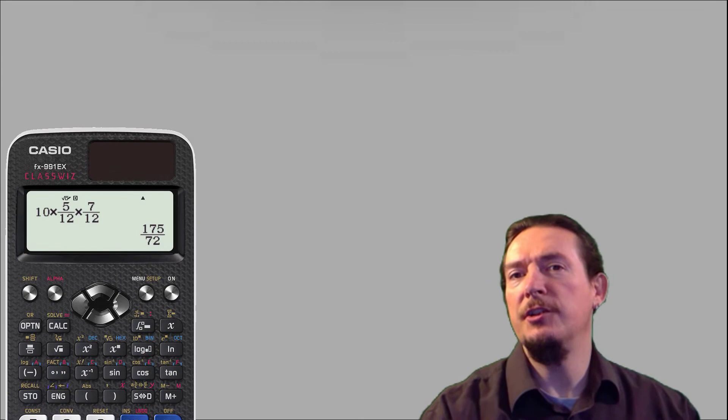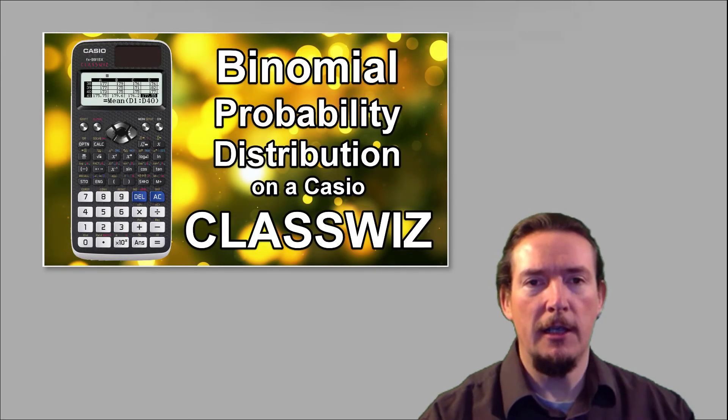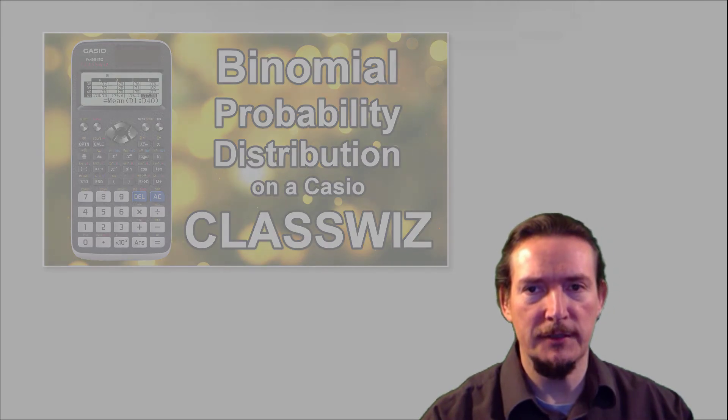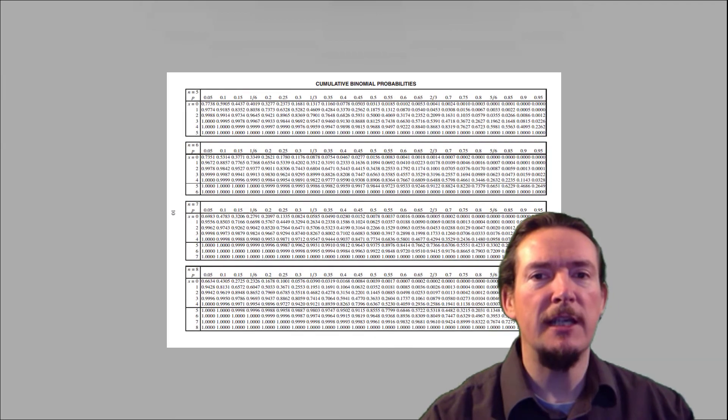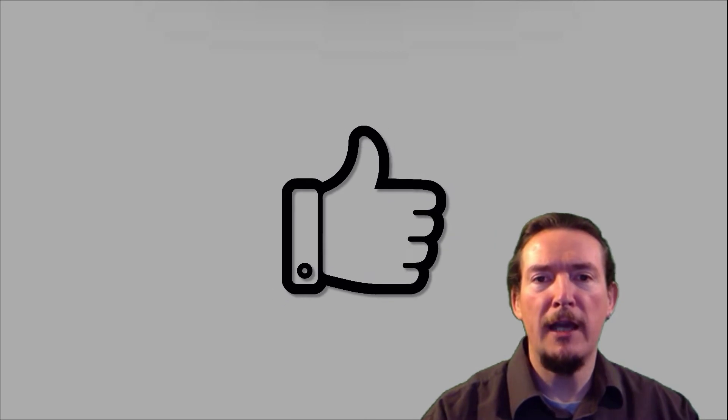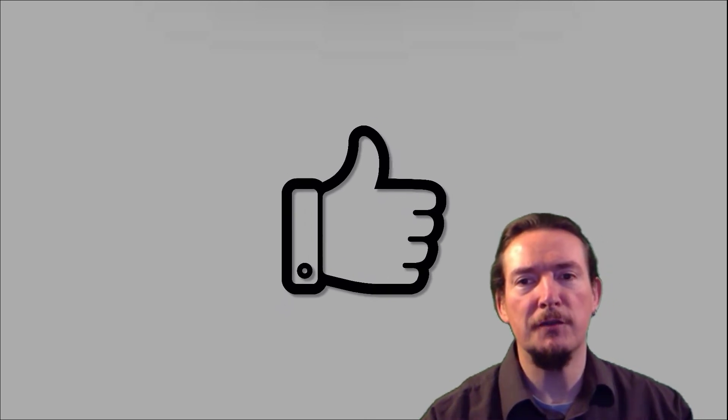You've now learnt how to use the distribution function on your Casio classwiz to generate single or cumulative binomial probability values, or the entire distribution with the press of a few buttons. And no need to use the maths tables from the formula book. Please give this video a thumbs up if you found it useful, and leave a comment if you have any questions or suggestions for future videos.